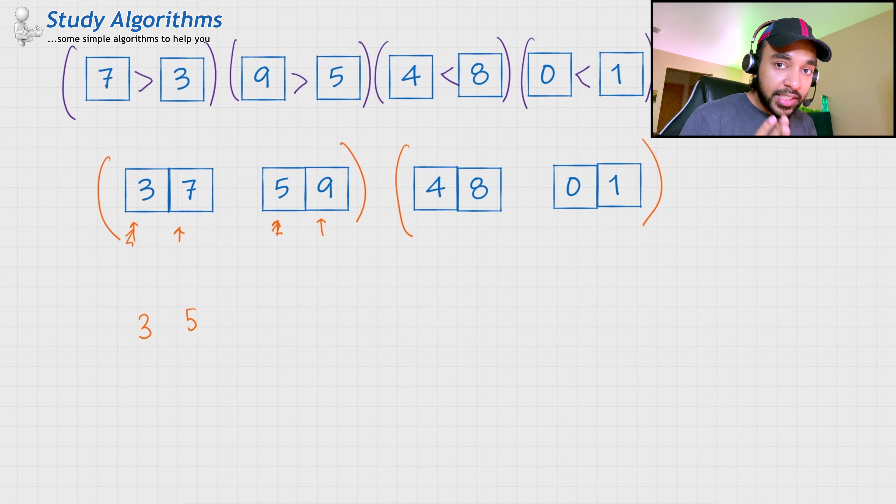Now, again, 7 and 9. Since, 7 is smaller, I move 7 over here and then I am remaining with 9. So, 9 would come over here and similarly, when I look up my other array, I can point at 4 and 0. So, 0 is smaller. So, I put 0 and move this pointer over here. Then, I have 1 and 4. Since, 1 is smaller, I move 1 over here and remove this pointer. I am remaining with 4 and then, I am remaining with 8.